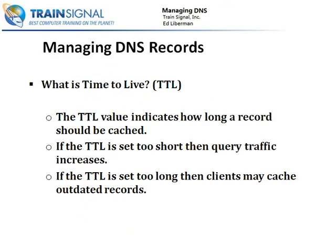What is time-to-live? In the last video, we talked about caching. A record's time-to-live value indicates how long that record should be cached by clients and other DNS servers. The default time-to-live for a zone is set to one hour. Typically you wouldn't have to adjust that, but you need to keep in mind that the time-to-live may be set too short if DNS query traffic increases due to clients frequently requesting name resolution for expired records, or too long if DNS clients are caching outdated records.